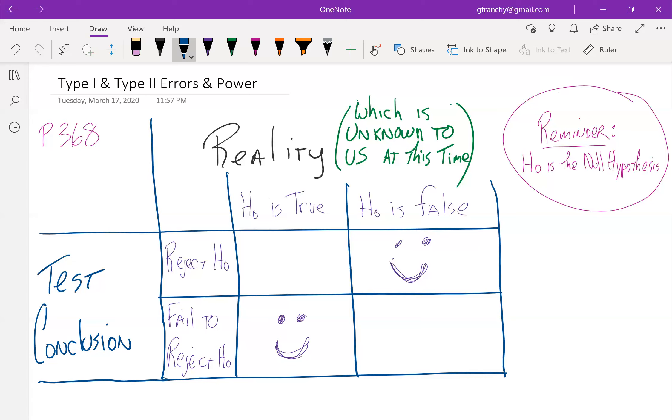And that would be rejecting the null hypothesis when it's actually true. And this case is known as a Type I error. Error because it's an issue there. It's wrong, but it's not wrong because we did anything, it wasn't our mistake, it's just kind of our bad luck.